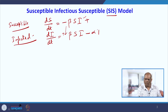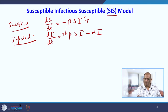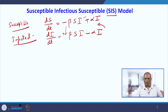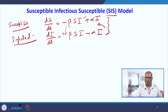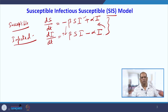From the infected class, a part recovers at rate alpha — that is minus alpha·I — but then again becomes vulnerable, so plus alpha·I is added back to susceptible. A susceptible person first gets infected, then takes some medicine, gets recovered, and moves back to the susceptible class. We now have this set of differential equations and will see how the solution changes compared to the SI model.